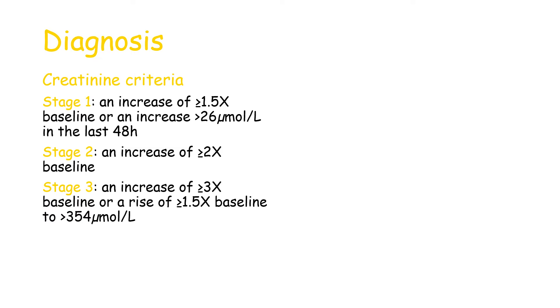For the diagnosis of AKI there are two criteria. Looking at the creatinine criteria first: you can have AKI stage one, stage two, or stage three. Stage one would be an increase of 1.5 times the baseline — in a patient where the baseline is 100, if their creatinine increases to 150, that would be stage one AKI. Or if you don't have the patient's baseline, stage one AKI can be defined as an increase of more than 26 micromoles per liter in the last 48 hours.